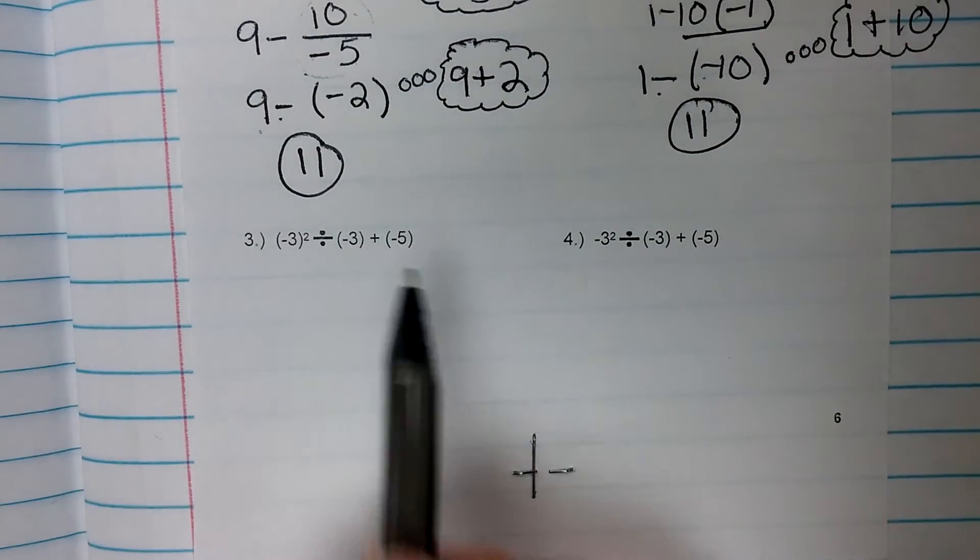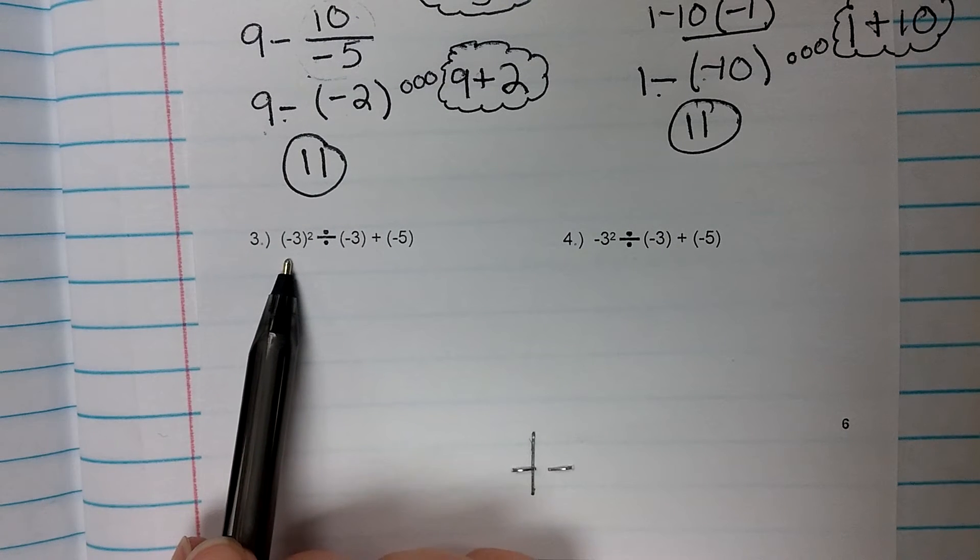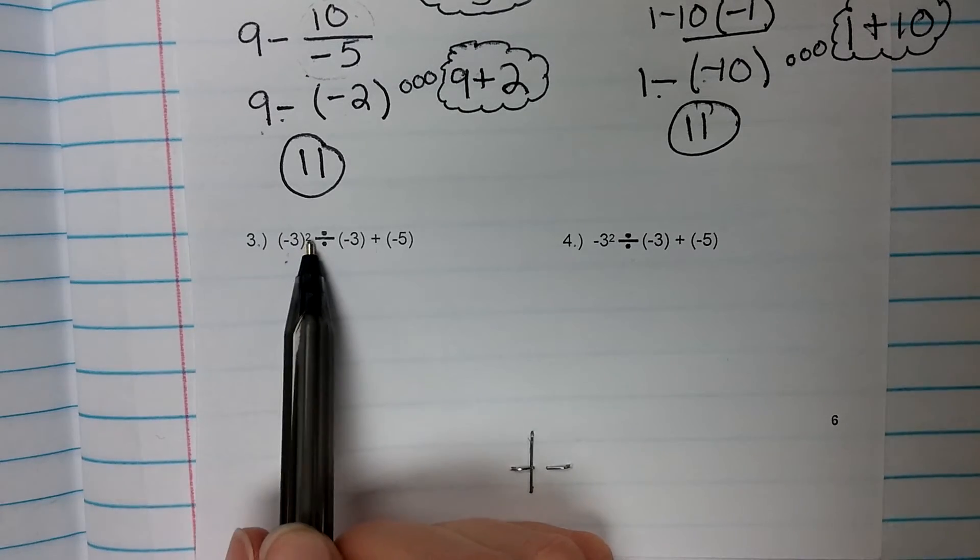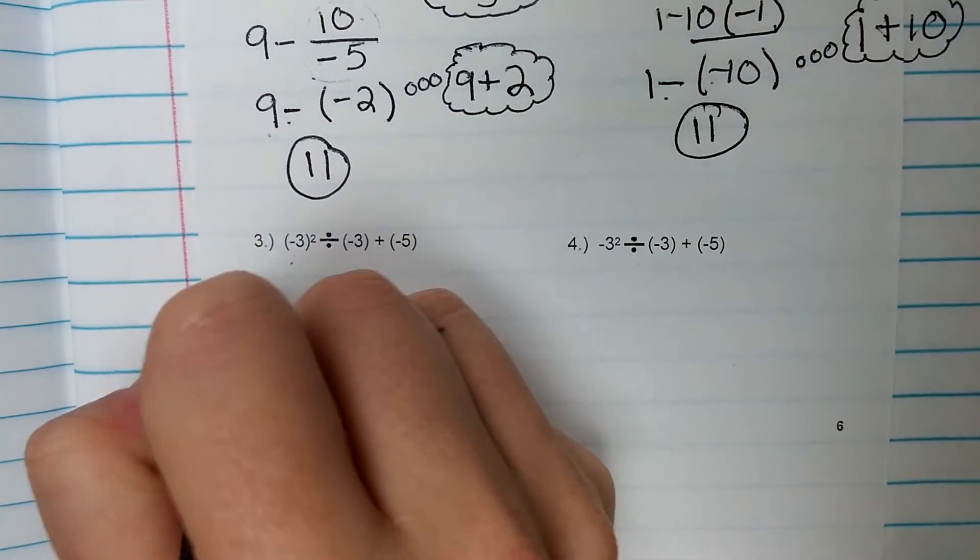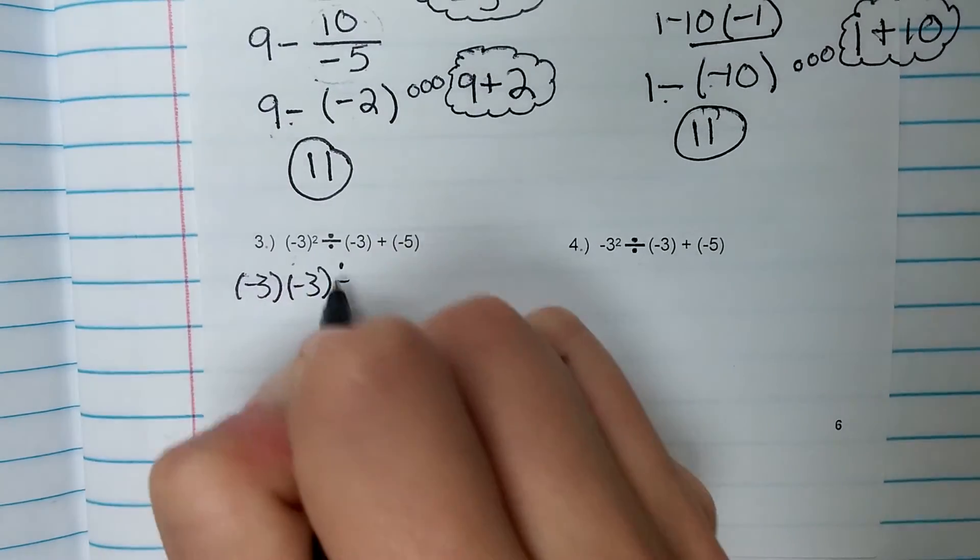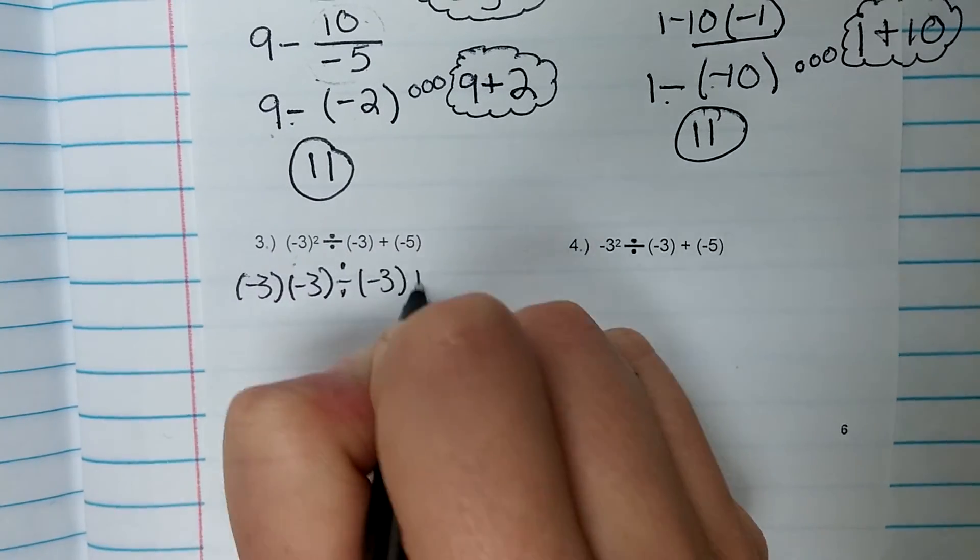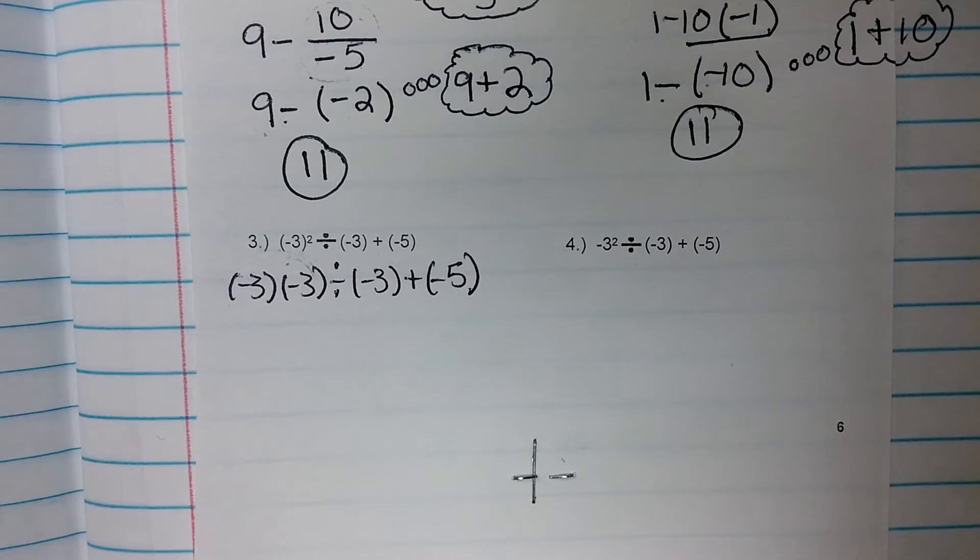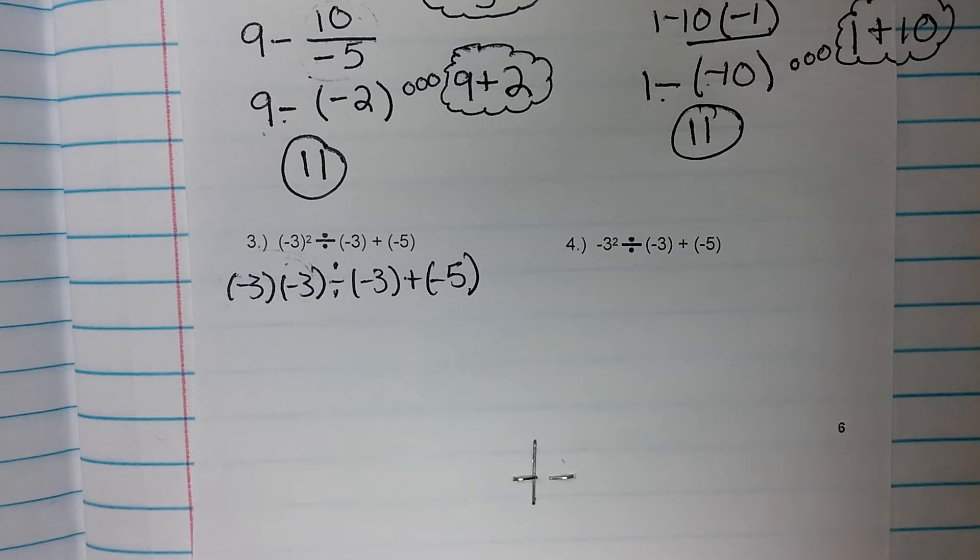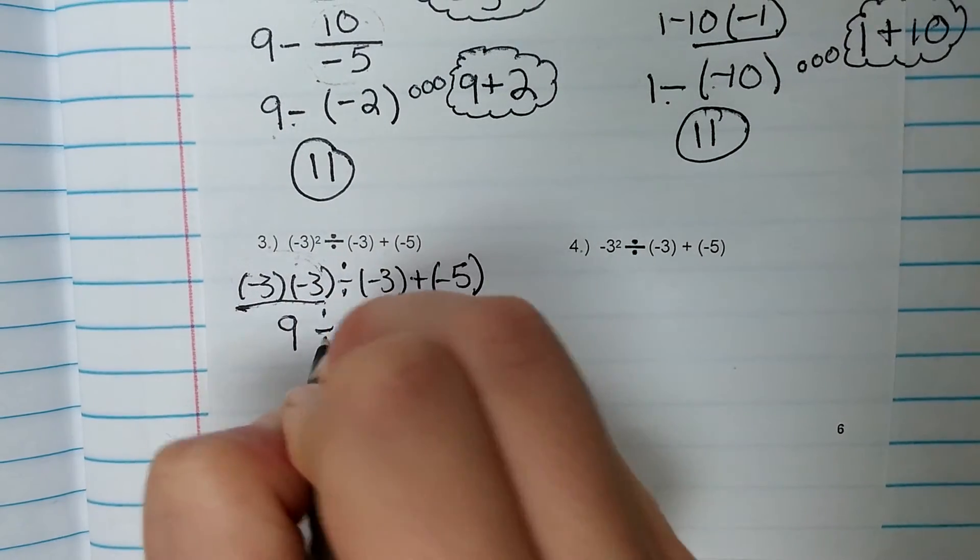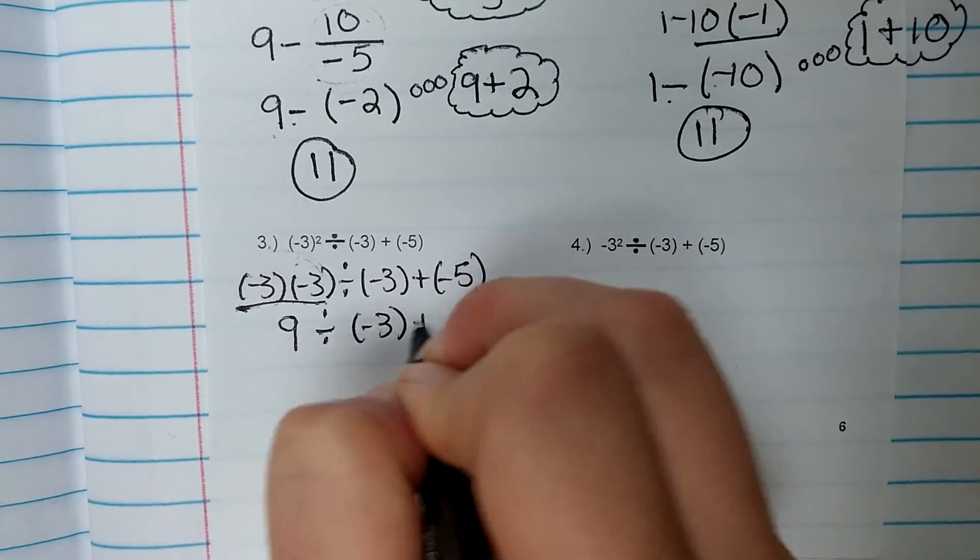Example number 3. We've got some exponents here, and we think about exponents as repeated multiplication. So this is not negative 3 times 2. This is actually negative 3 times negative 3. And we can copy everything else down. And I would highly recommend taking a minute to write that exponent out so you can see exactly what that looks like. Now we do multiplication from left to right. Negative 3 times negative 3 gives us 9. And again, copy everything else down in order.